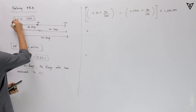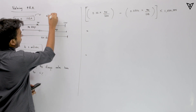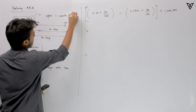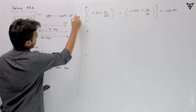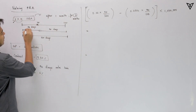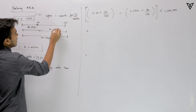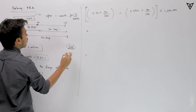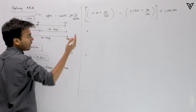Say for example we have a 1×4 FRA contract. The long party will be borrowing after 1 month for a period of 3 months — we get 3 months from 4 minus 1. So 1 month is 30 days and the borrowing period is 3 months, that is 90 days.